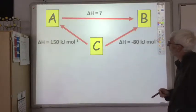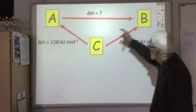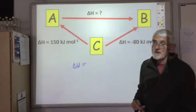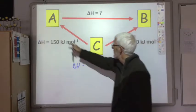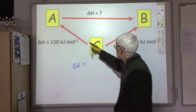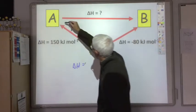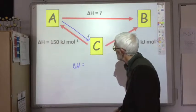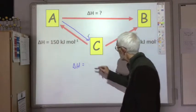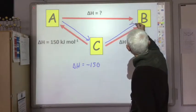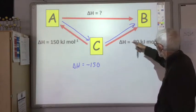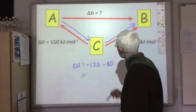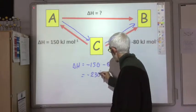Another example: what is the enthalpy change for A changing into B? For whatever reason it's not possible to determine that experimentally, but we can go from A to C and then from C to B. We know going from C to A the ΔH value is 150, so going from A to C the enthalpy change will be minus 150. Then going from C to B, same direction as the arrow, the ΔH value is minus 80, so the ΔH value for A to B would be minus 230 kilojoules per mole.